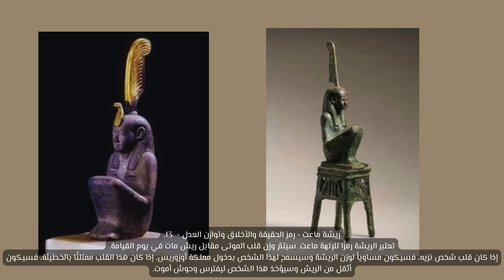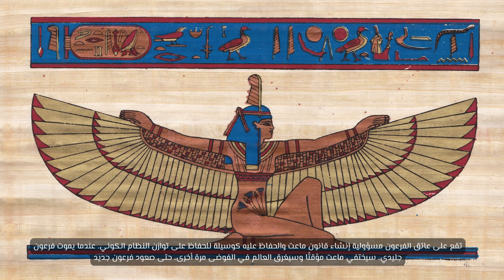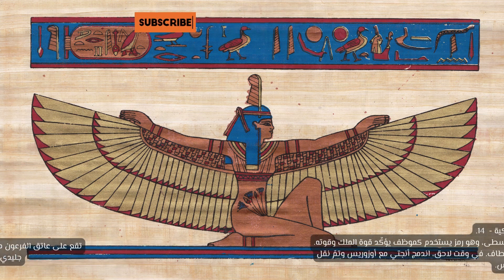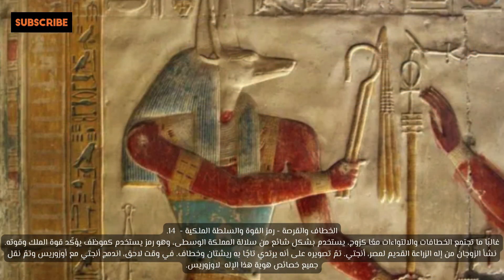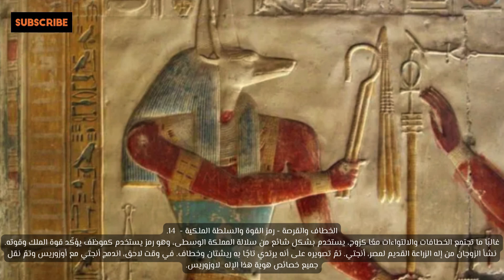Thirteen: Maat's feather, a symbol of truth, morality, and the balance of justice. The feather is considered a symbol of the goddess Maat. The heart of the dead will be weighed against the feather of Maat on the day of resurrection. If a person's heart was honest, it would equal the weight of a feather and that person would be allowed to enter the realm of Osiris. If the heart is filled with sin, it will be heavier than the feather and that person will be taken to be devoured by the monsters of the underworld. It is the responsibility of the pharaoh to establish and maintain the law of Maat as a means of maintaining the balance of the cosmic order. When a pharaoh dies, Maat will temporarily disappear and the world will plunge into chaos until a new pharaoh rises.